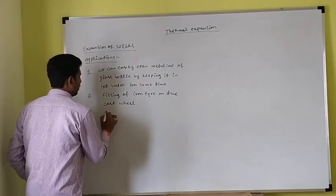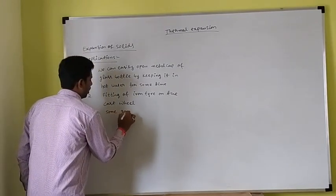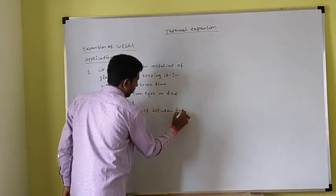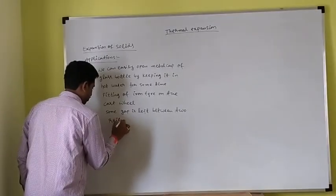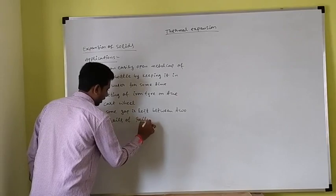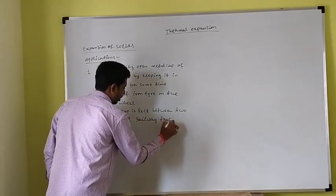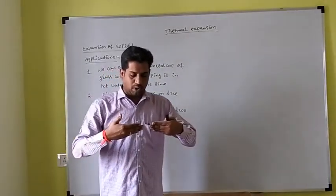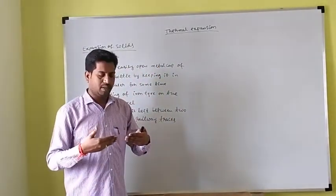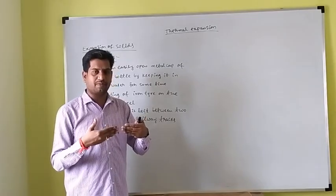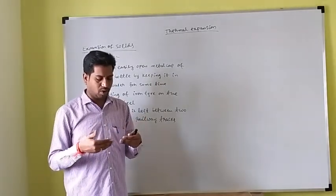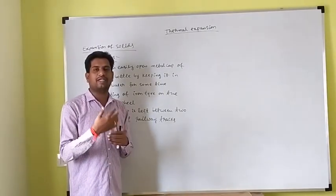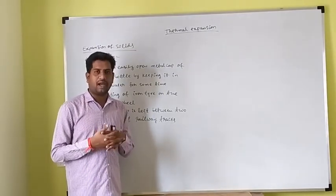The third application is that some gap is left between two rails of a railway track. If we observe, there is a gap between the two rails. This gap is left to allow the linear expansion of the solid in summer and winter.